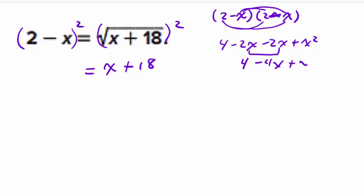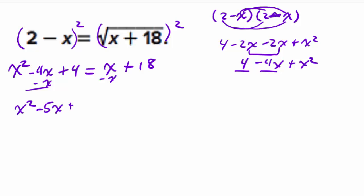Simplifying, we get x squared minus 4x plus 4. Writing in standard form: x squared minus 4x plus 4 equals x plus 18. To force equal to zero, subtract x from both sides giving x squared minus 5x plus 4 equals 18, then subtract 18 from both sides, leaving x squared minus 5x minus 14 equals zero.